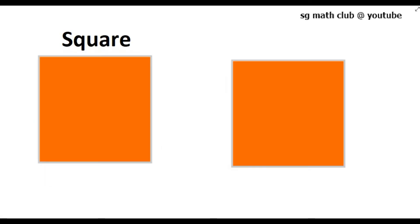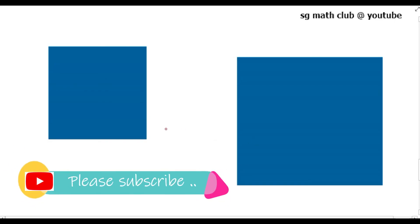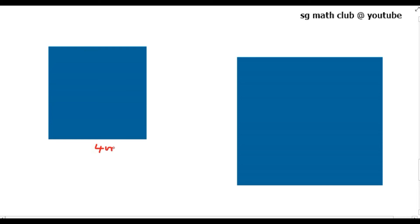Now when will you say that two squares are congruent? Two squares are said to be congruent if their sides are of the same length. For example, if the side of the first square is 4 cm, the side of the second square should also be 4 cm. In a square, all sides are of equal length. These two squares are not congruent because one is small and the other is big — one has a side of 4 cm and the other perhaps 7 cm.